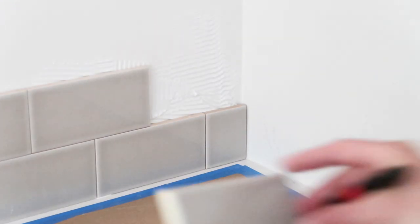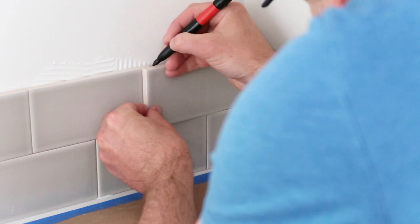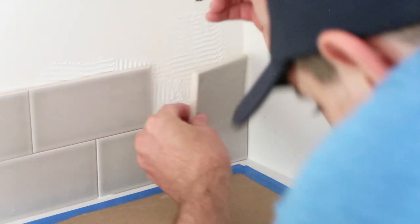When you're ready to make your first cut at the end of your row, we find it's much easier to hold the tile in place, make a little mark with a marker and cut it there instead of trying to measure.